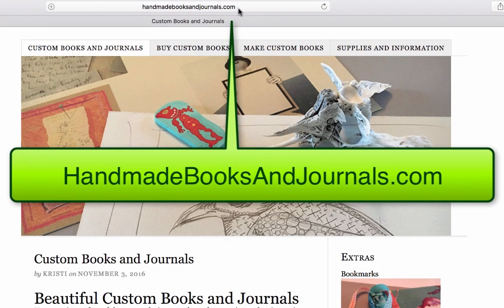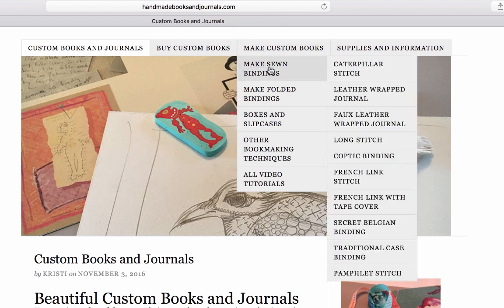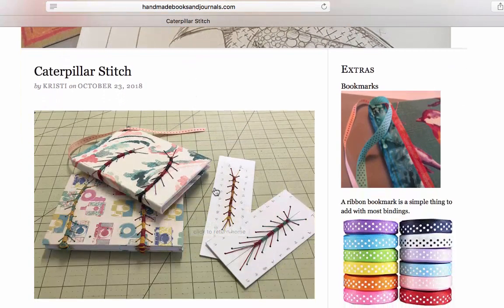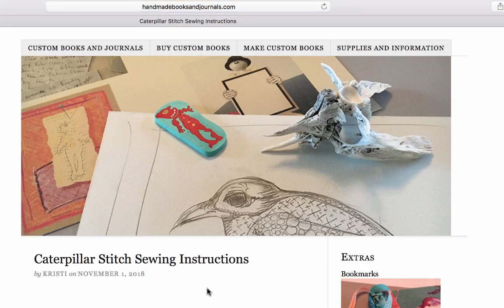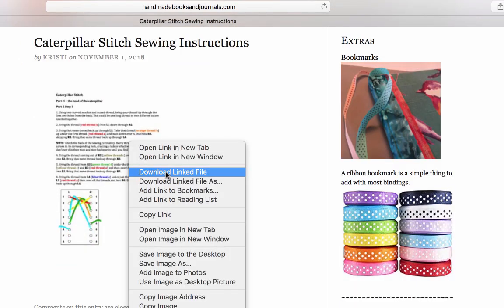Just go to handmadebooksandjournals.com, Make Custom Books, then to Make Sewn Bindings, click on Caterpillar Stitch, and then on the link Caterpillar Stitch Downloadable Sewing Instructions. The last step may vary depending on what operating system and browser you're using. I'm on a Mac in Safari, so I can Control-click on the image and choose Download Linked File to download it to my desktop.